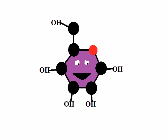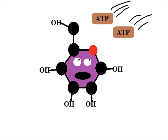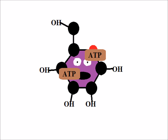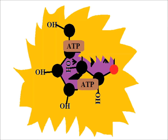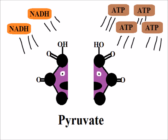A glucose molecule bursts in with lots of energy. ATP molecules invest energy to restrain and break it up. After a bunch of reactions, the process yields charged-up energy molecules. The score is updated at the National Bank of Energy.